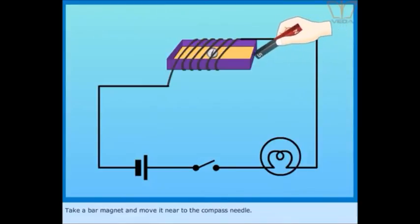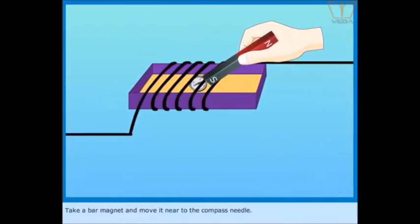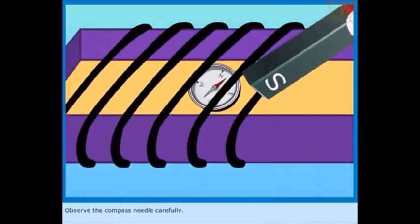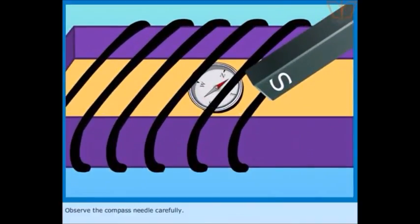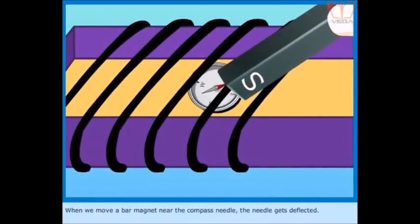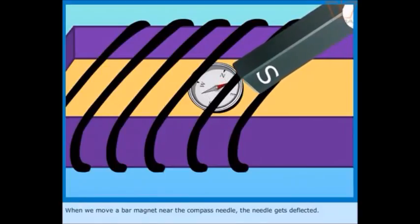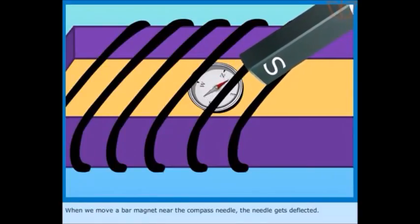Take a bar magnet and move it near to the compass needle. Observe the compass needle carefully. When we move a bar magnet near the compass needle, the needle gets deflected.